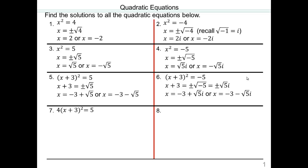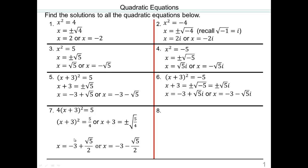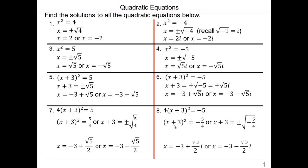4 times (x plus 3) squared equals 5. Divide both sides by 4, so x plus 3 equals plus or minus square root of 5 quarters, which is square root 5 over square root 4, which gives you square root 5 halves. Subtract 3: negative 3 plus square root 5 halves, or negative 3 minus square root 5 halves. The only difference in the imaginary version is you end up with square root 5 halves i — this is the real part, this is the imaginary part.